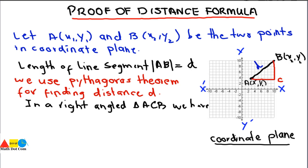Now, how do we find sides AC and BC? For side AC, point C has the same x-coordinate as point B and the same y-coordinate as point A. So point C is at (x2, y1). Therefore, the distance AC equals x2 minus x1 — the difference in the x-coordinates.